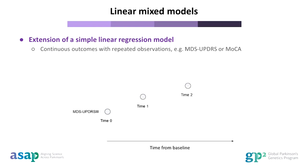The x-axis here represents time. The y-axis represents the scale you are looking at — here it is the MDS-UPDRS Part 3. You can then extrapolate the slope, or rate of progression, over time for each of your patients. This is what we analyse in a linear mixed model: the average slope from many patients, and also the intercept, or time zero, which is the baseline measurement.